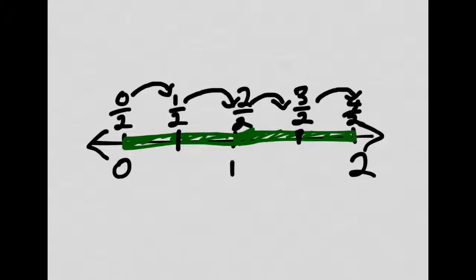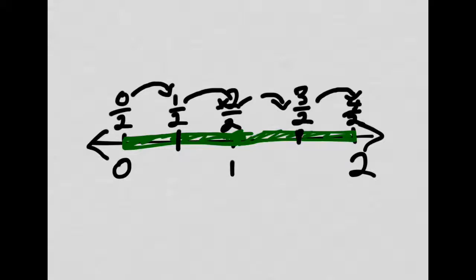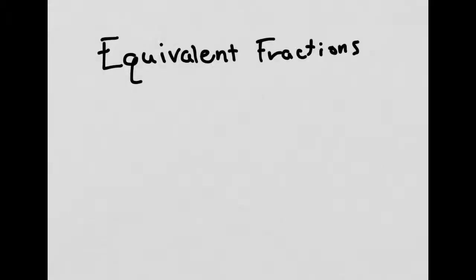You'll notice that some of these are lining up. Two halves is at the same point as one — it should have been directly above it, but I didn't draw it very well. Four halves is right above two. That's not a coincidence. As we count along a number line and lay out all the fractions on it, some of them are going to match up with each other. And that brings us to our next topic, which is equivalent fractions.